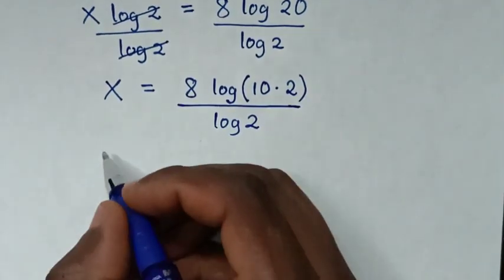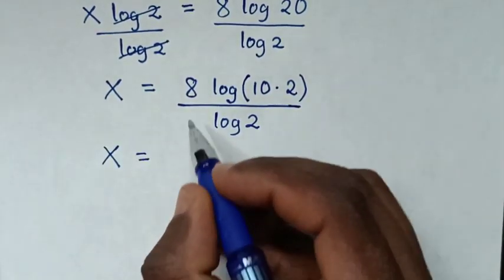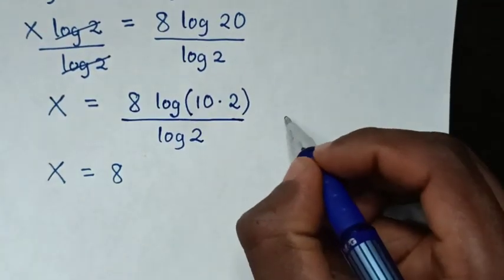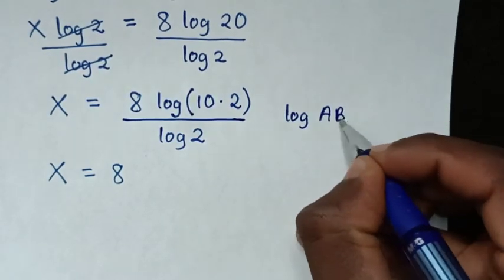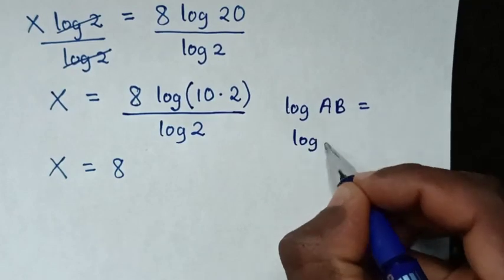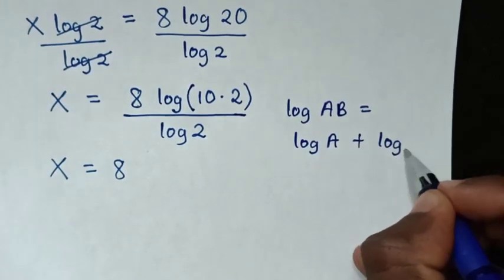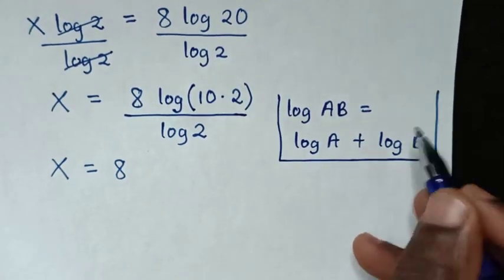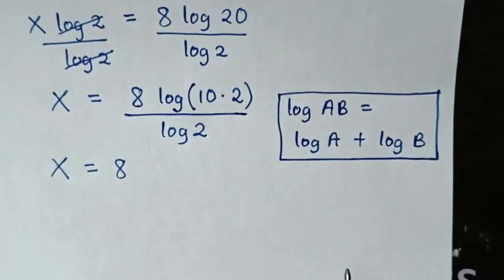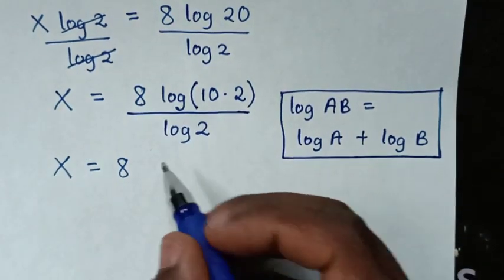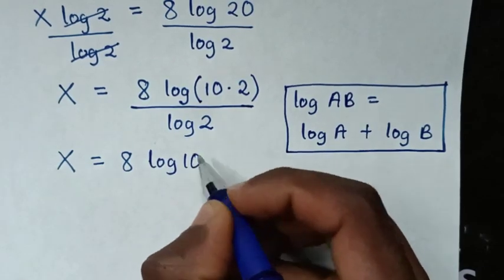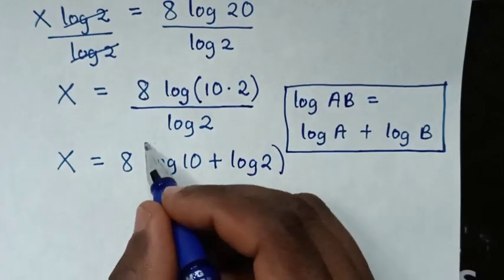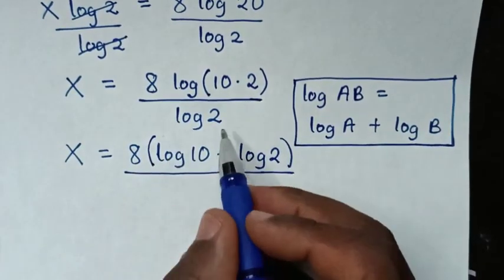Then in the next step, it will be x is equal to 8. Then from log of 10 times 2, which is in the form of log of a times b, which is equal to log of a plus log of b. So from log of 10 times 2, it will be log of 10, then plus log of 2, bracket over log of 2.